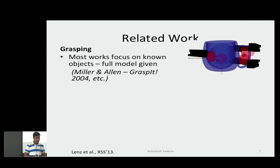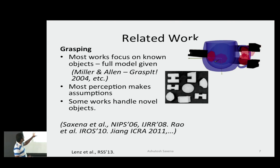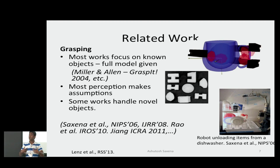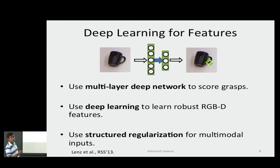The focus is to have the robot grasp new objects it has not seen before, but if you know the rough shape of the object you can figure out how to grab it. The goal is to start with an image and learn a feature-based representation from pixels to map it to a good grasping rectangle. We used a multi-layer deep learning network to score the grasp, with some interesting structural regularization to enable the learning algorithm to work from multi-modal data.